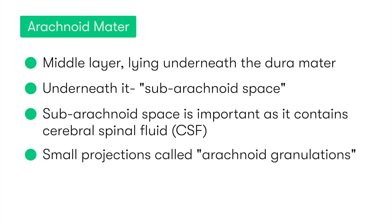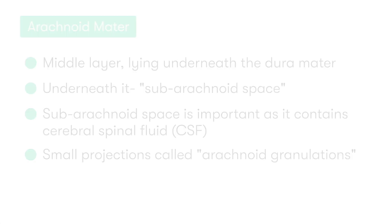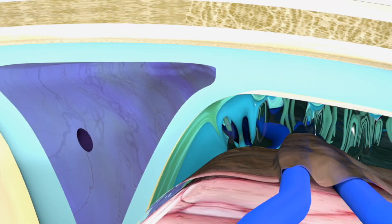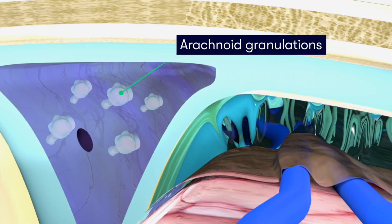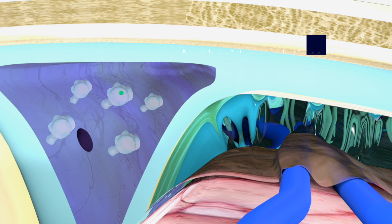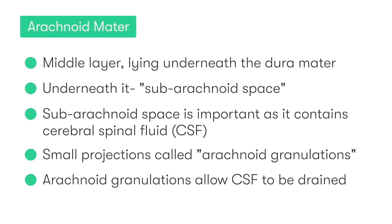There are small projections of the arachnoid mater which we refer to as arachnoid granulations. These arachnoid granulations project into the dura and allow CSF to enter the venous circulation, thus allowing CSF to be drained.